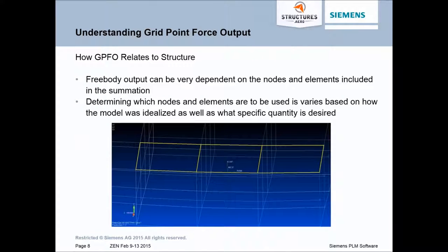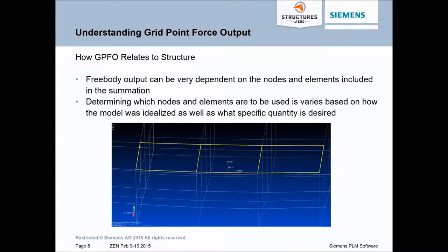Free body output is very dependent on the nodes and elements included in the summation. In a few minutes we're going to jump into FEMAP and create a free body, an interface load, and a section cut — and you'll see that these produce very different output. Determining which nodes and elements to use is going to be based on how your model was idealized or created, as well as what result you're looking for.